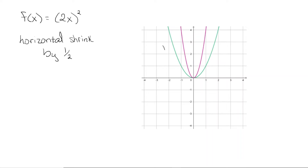Here we have the graph of x squared, and I'm going to horizontally shrink my x coordinates. So negative 1 times one half would be negative one half. Negative 2 times one half would be negative 1. On the other side, 1 times one half is one half, and 2 times one half is 1. So we can see that we're shrinking this graph horizontally by a factor of one half.